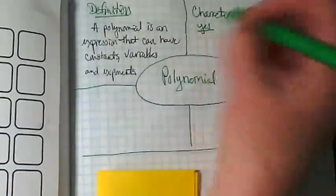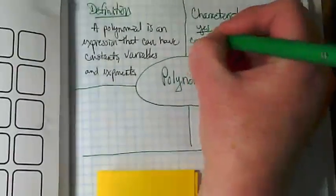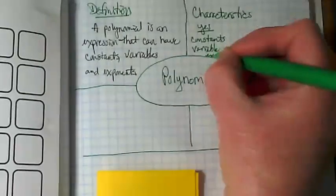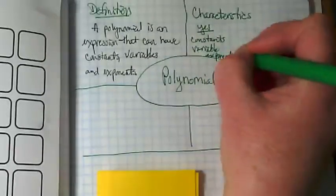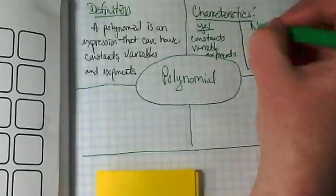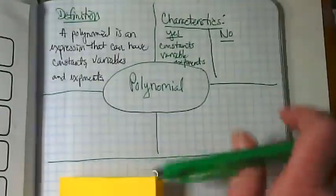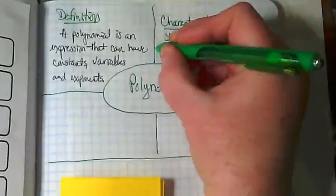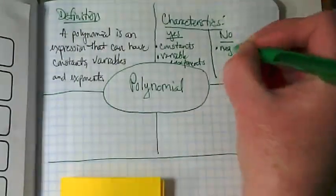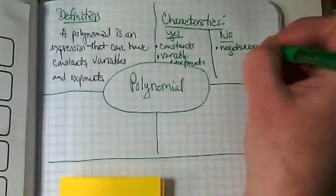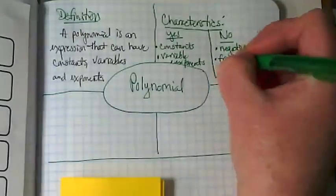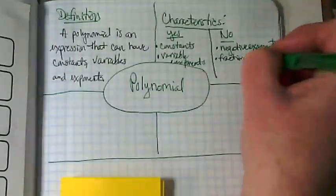So on our yes side, we're going to have constants, variables, and exponents. On the no side, go ahead and put bullet points on these. There are no negative exponents, fractional exponents, or infinite terms.